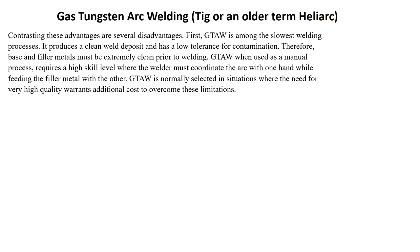Contrasting these advantages are several disadvantages. First, TIG is among the slowest welding processes. It produces a clean weld deposit and has a low tolerance for contamination; therefore, base metal must be extremely clean prior to welding. TIG, when used as a manual process, requires a high skill level where the welder must coordinate the arc with one hand while feeding the filler metal with the other. TIG is normally selected in situations where the need for very high quality justifies the additional costs to overcome these limitations.